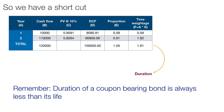An important thing to note is that the duration of a coupon-bearing bond is always less than its life. In our example, we had a two-year bond and the duration came to 1.91 years, which is less than two years. This holds true for all coupon-bearing bonds.